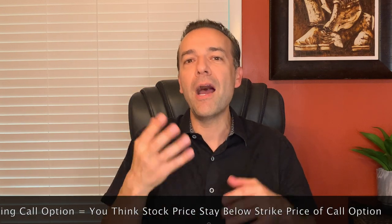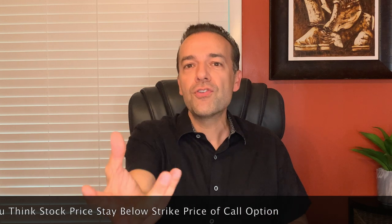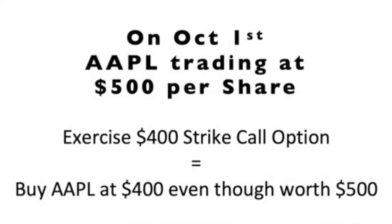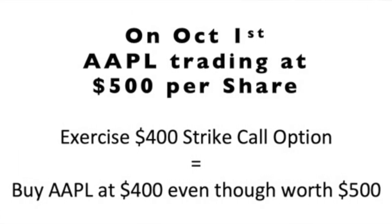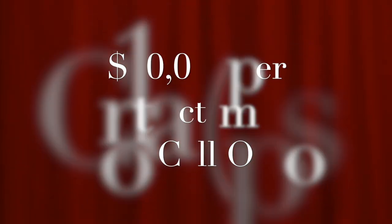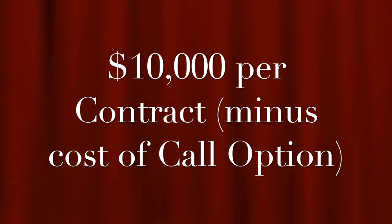If you buy a call option, it gives you the right to call 100 shares for each contract you own of the underlying stock — in this case Apple — from an option seller, and you only have to pay the strike price no matter what the stock is currently trading at. Going back to our Apple example, looking at the $400 strike call expiring October 16th: let's say that by October 1st, Apple is trading at $500 per share. We could exercise the option and buy Apple at $400 per share, giving us a $10,000 profit per contract. By using options, you can gain control of a stock for a fraction of what it would cost to buy it outright.